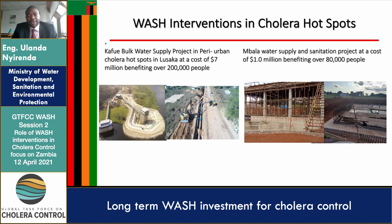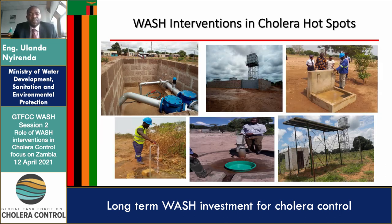On the right we have Mbala, in the north part of Zambia, which is a cholera hotspot — there was serious cholera there in 2018. We are doing the Mbala water supply as a team project at a cost of one million US dollars, benefiting 80,000 people.